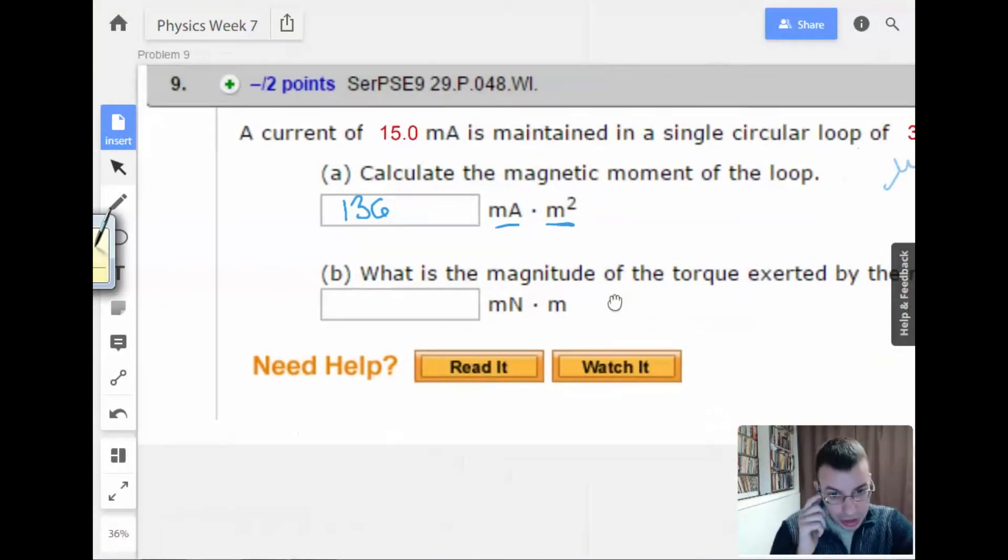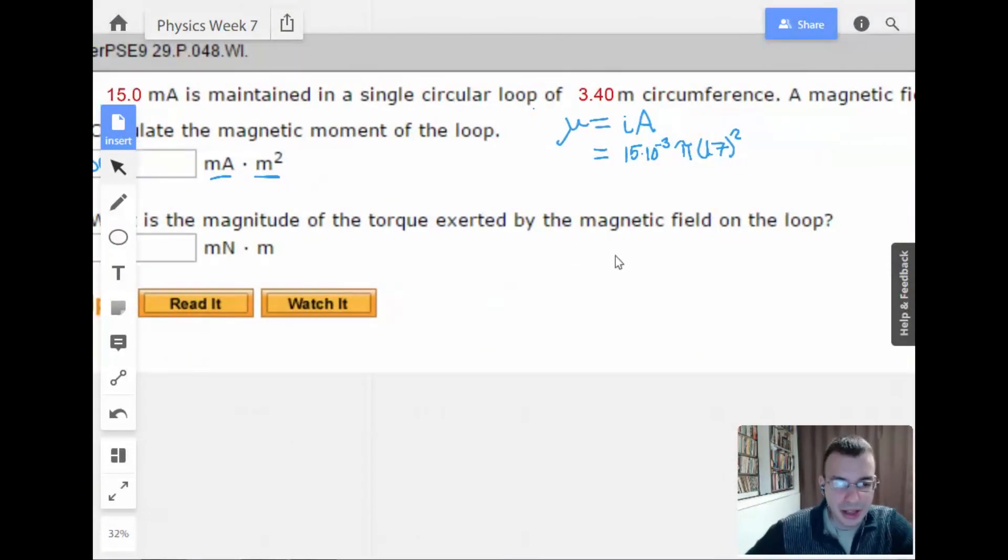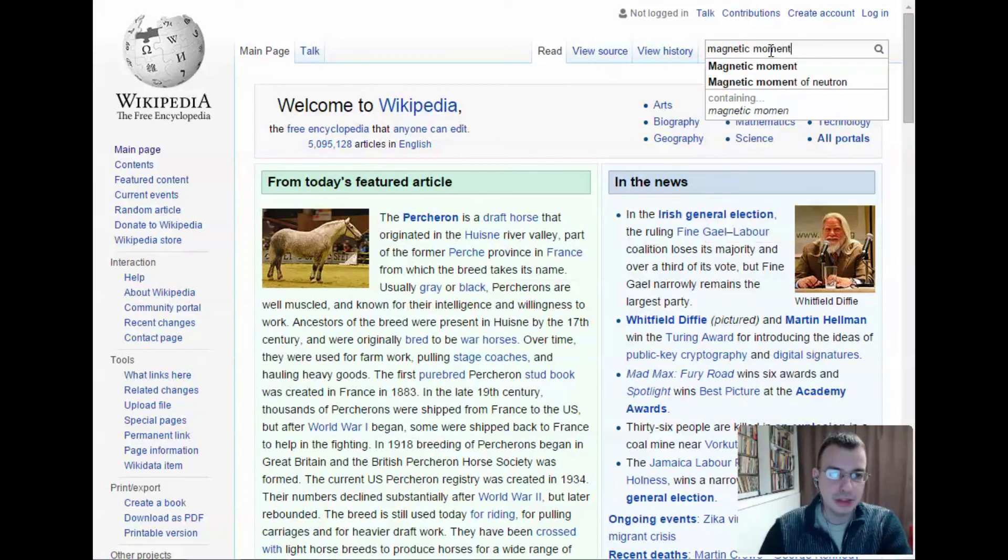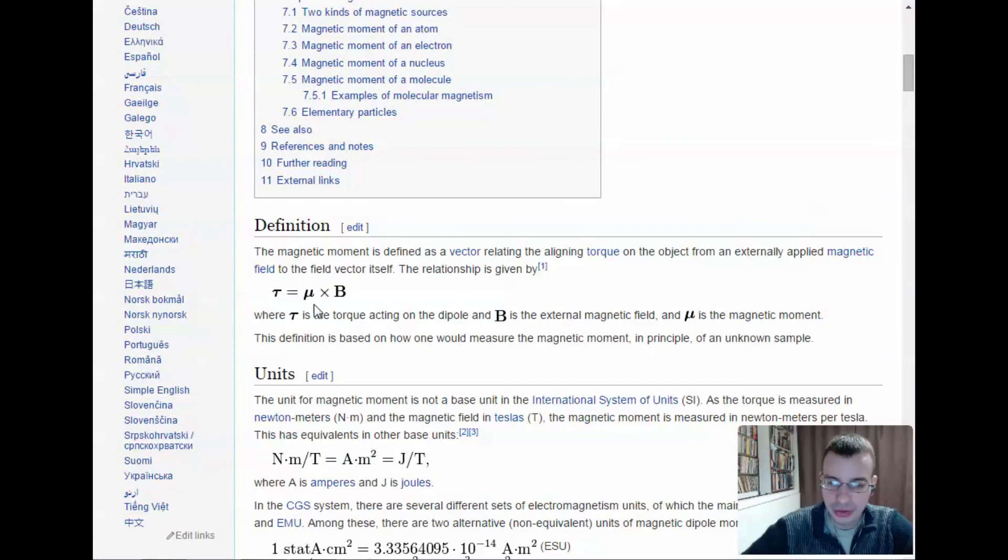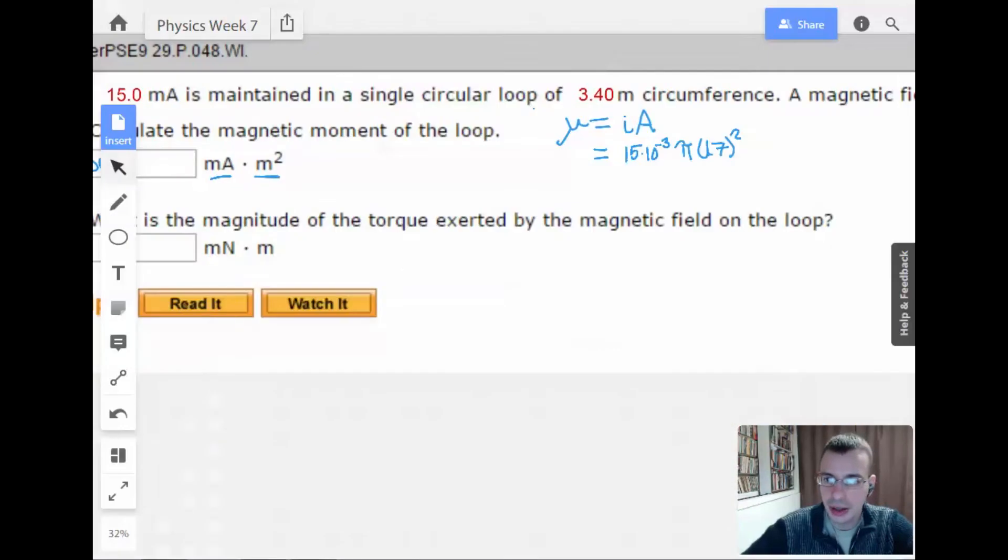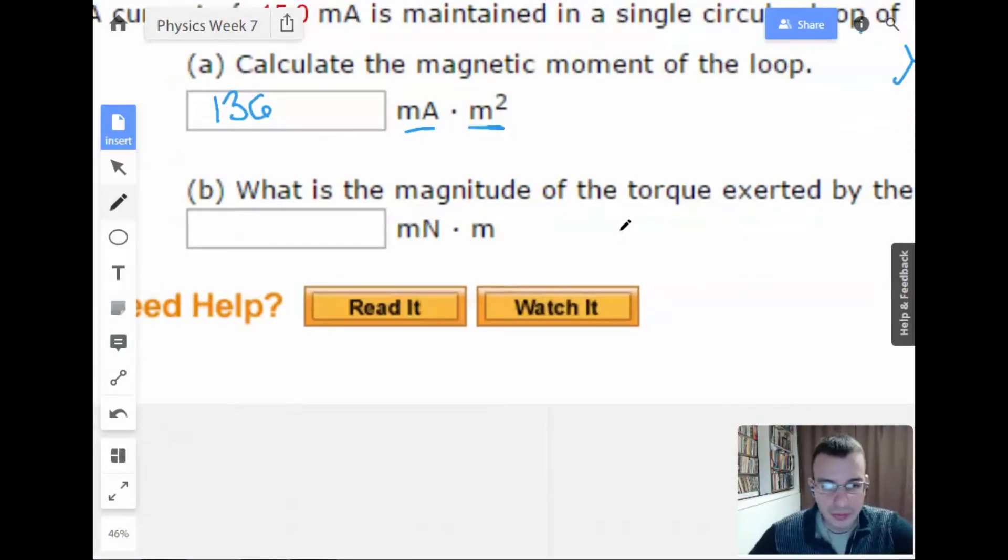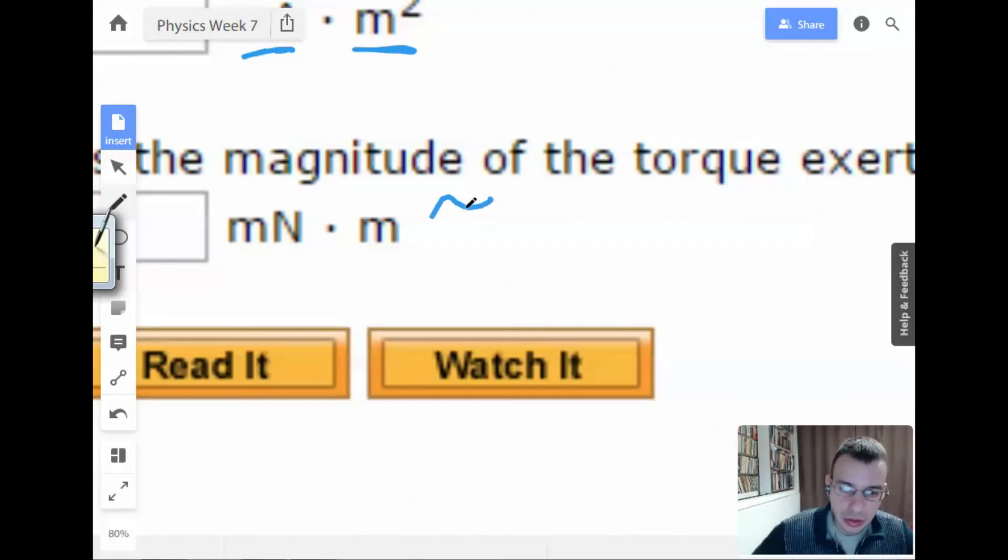Okay. What is the magnitude of the torque exerted by the magnetic field on the loop? Alright, it's a magnetic moment. Torque equals mu cross B. Torque equals magnetic moment cross magnetic field. And there we go.